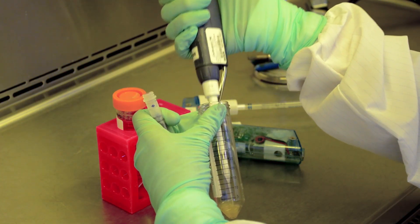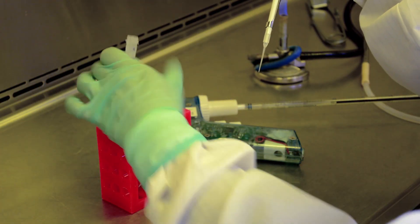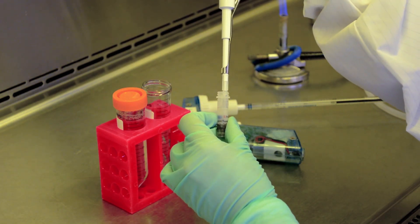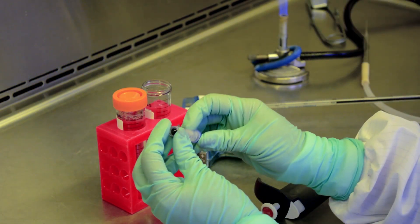Remove 50 microliters of the homogeneous cell suspension and dispense the aliquot into the counting tube. Mix gently.